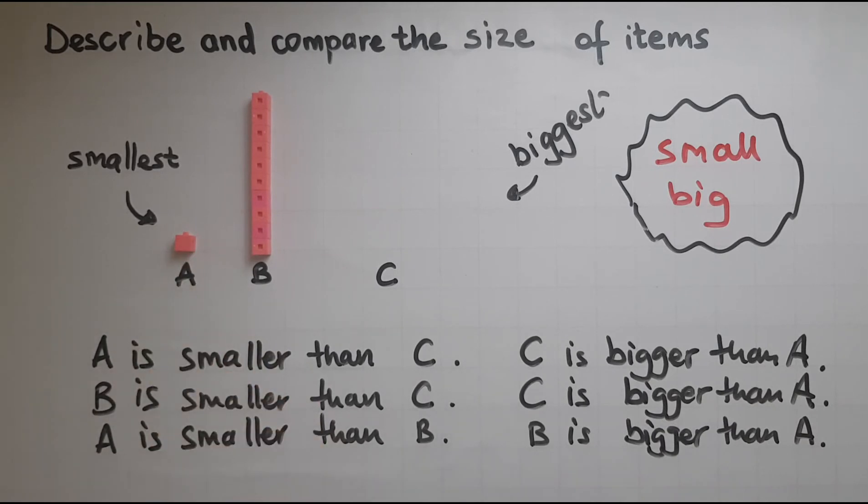So when I compare two items with each other I'm using the -er at the end. Smaller. Bigger. So there is that -er at the end all the time.